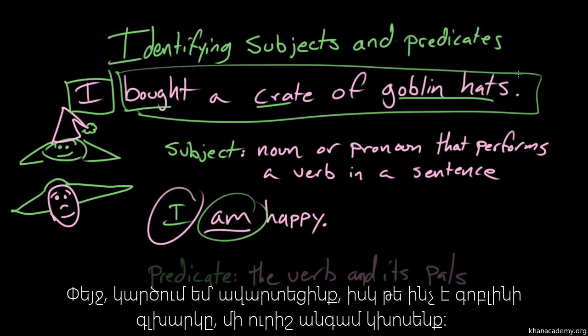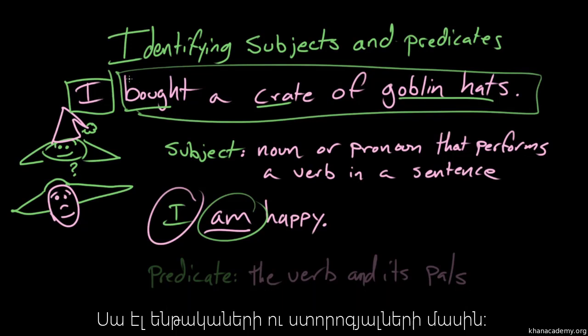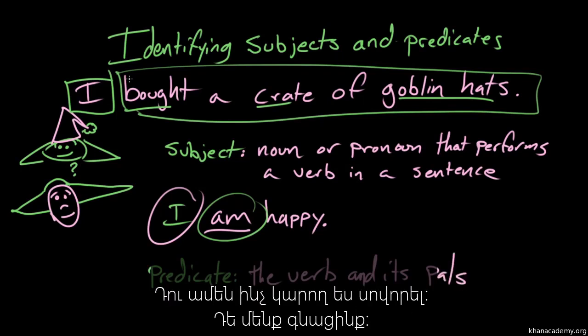I think that covers everything except exactly what a goblin hat is, but we can talk about that some other time. So that's identifying subjects and predicates. You can learn anything. David out. Paige out.